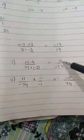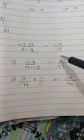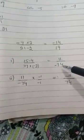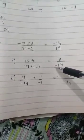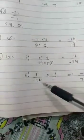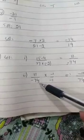Now you are asked that when you have a fraction with denominator negative, how can we make it positive? We will just simply write 11 by minus 74.